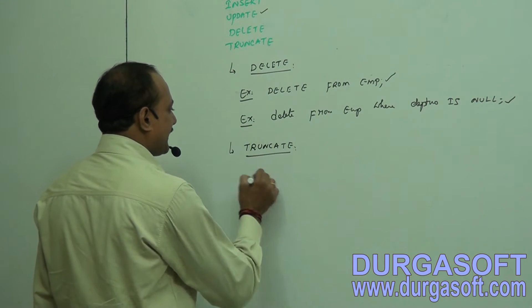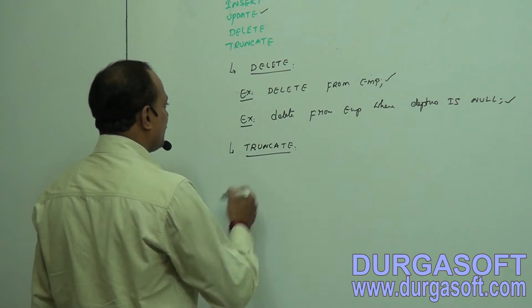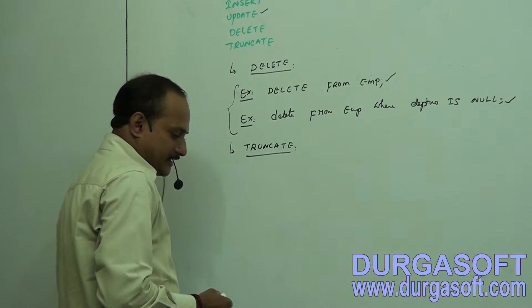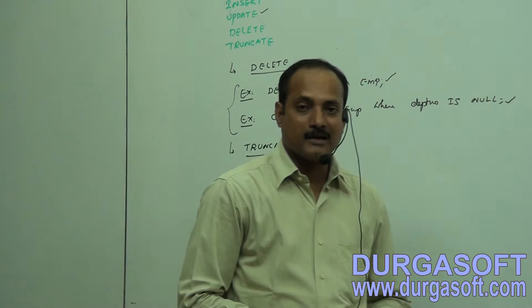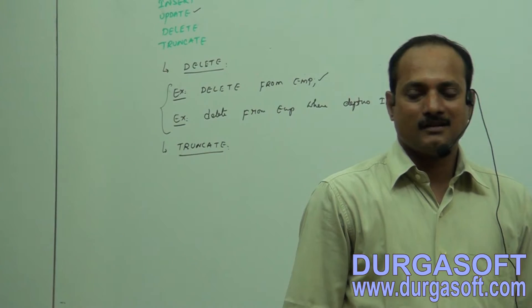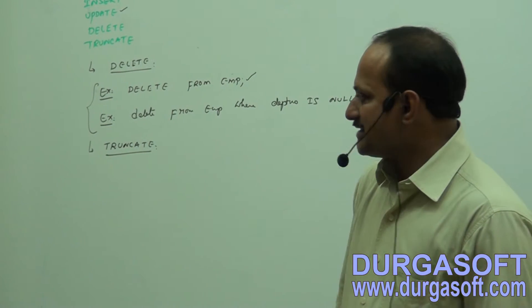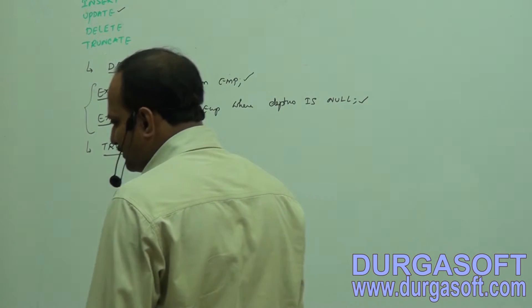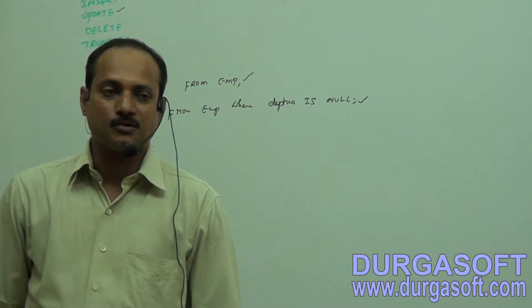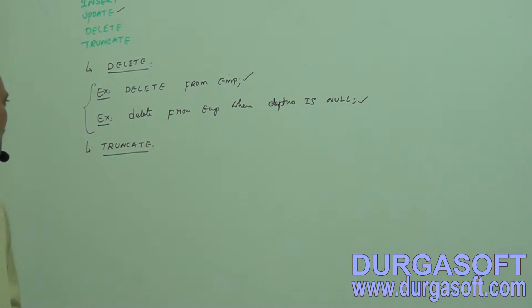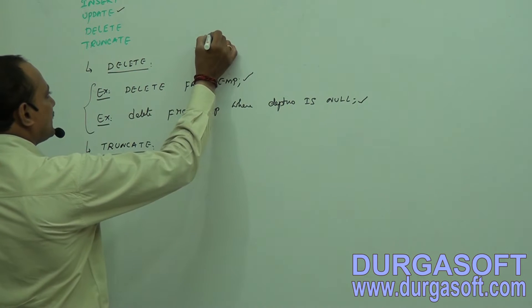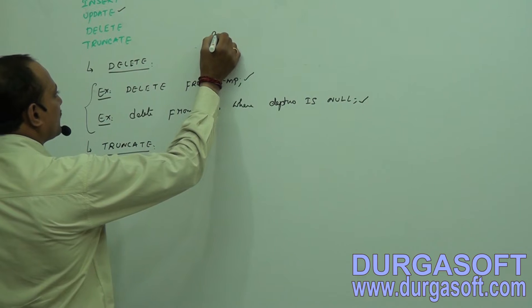What is the TRUNCATE command? If you make a DELETE operation, the records will be deleted temporarily. In the same login session, the deleted data can be rolled back — meaning you can restore the deleted data into the table. This is done by using the TCL command ROLLBACK.